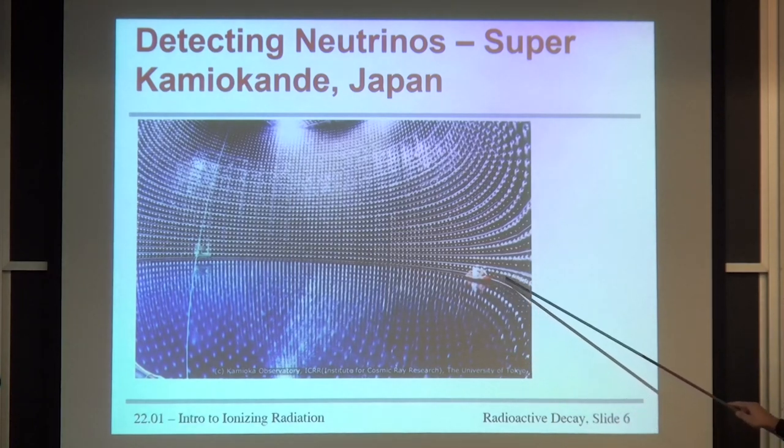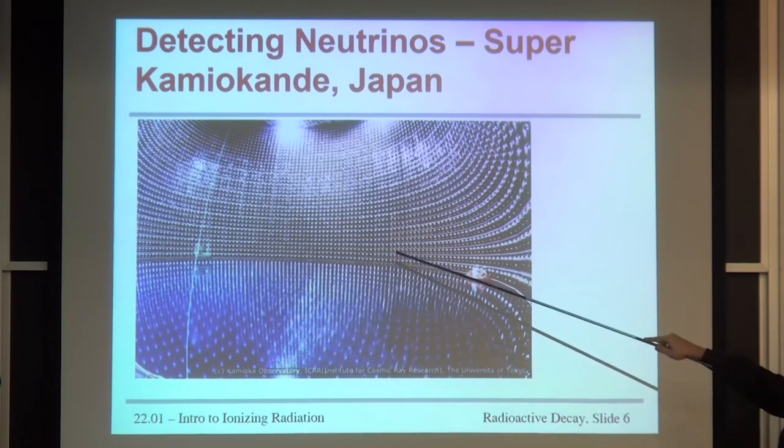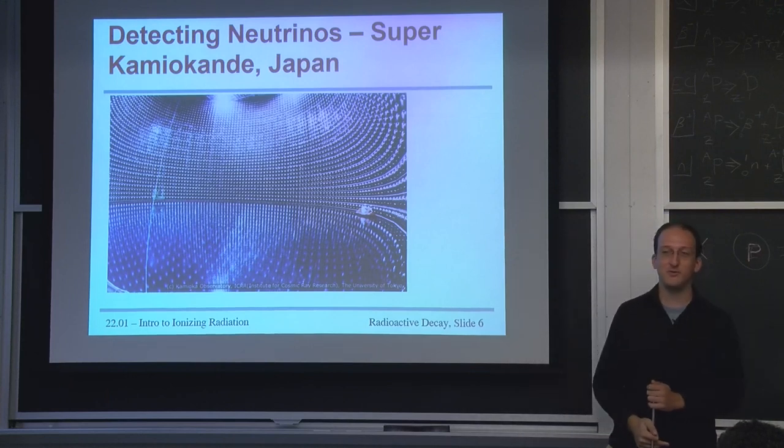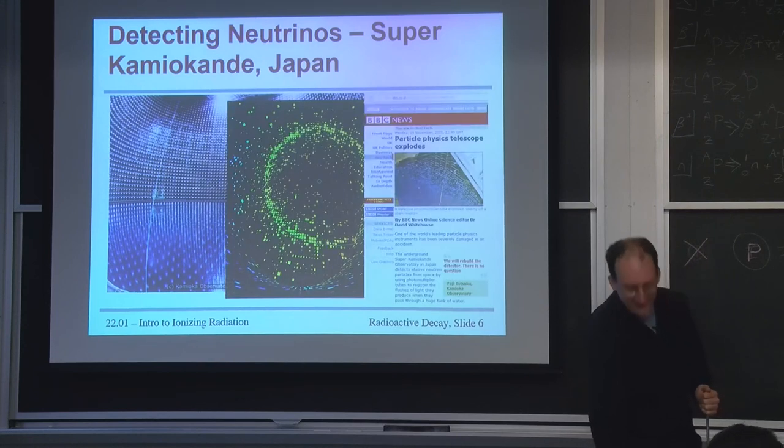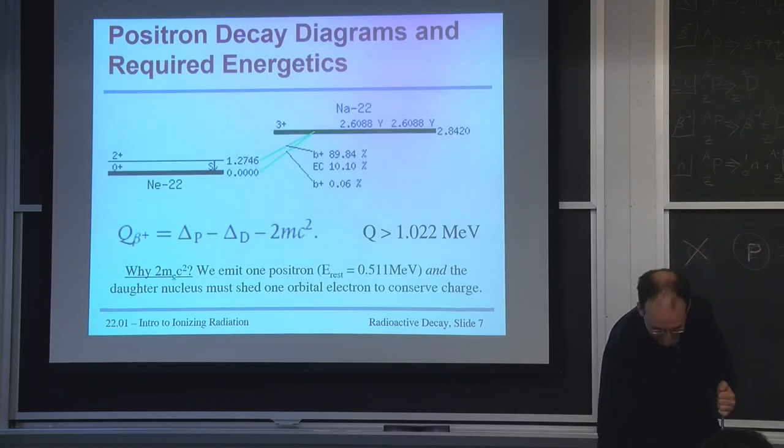What happened here is one of these 30,000 or so tubes was slightly defective, couldn't hold the pressure, and it burst. And the resulting sound shock wave from one photo tube bursting blew up about 11,000 of them. They did rebuild it. And it's still going.